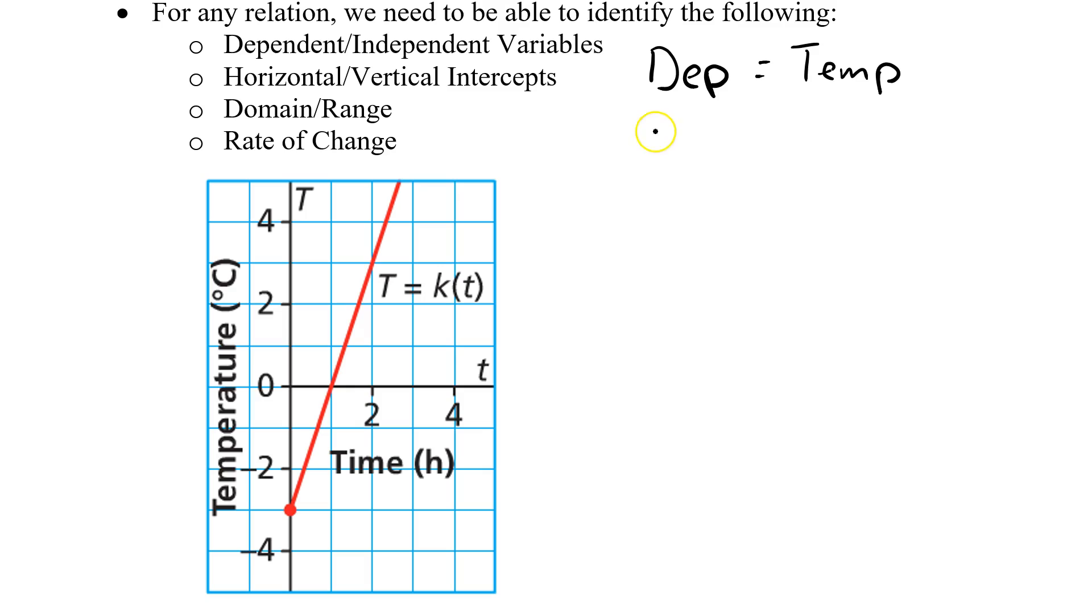And then let's look at our independent variable. Our independent variable is what's on our x-axis, our horizontal axis. So our variable is time.